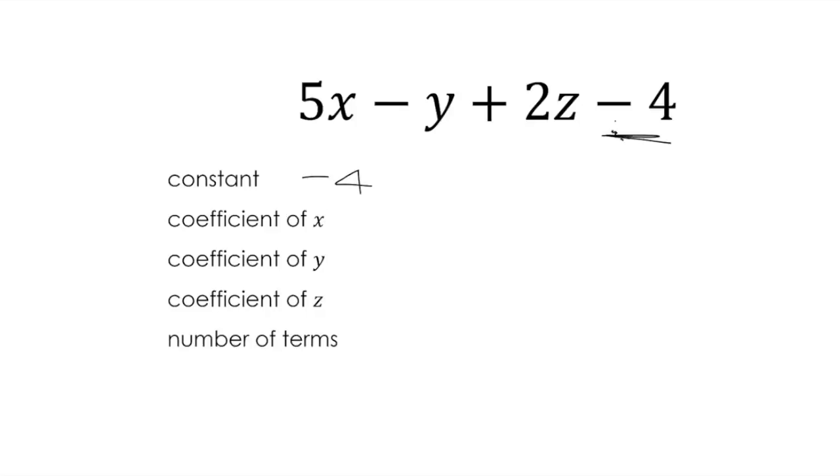Then the coefficient of x, that's the number that x is multiplied by. So let's have a look here. 5x, so the number x is multiplied by is 5. Have a look here. What's the coefficient of y? What number is y multiplied by? Remember, if we don't have a number there, there basically is a 1 there. So we don't write that in. And remember, if you've got that minus sign, you need to include that. It's negative 1, the coefficient of y.